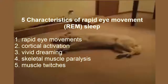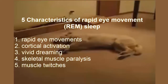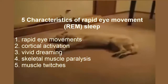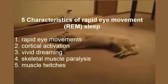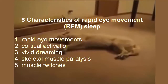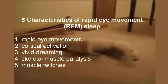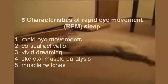It is during REM sleep that we have dreams. The characteristics of REM sleep include rapid eye movements, cortical activation, vivid dreaming, skeletal muscle paralysis, and muscle twitches.